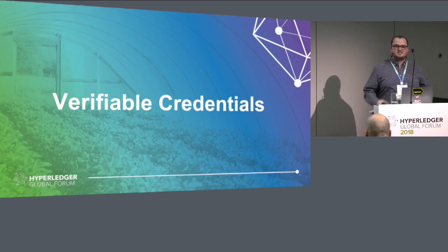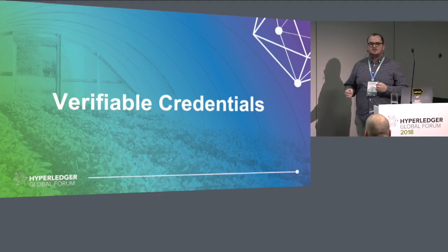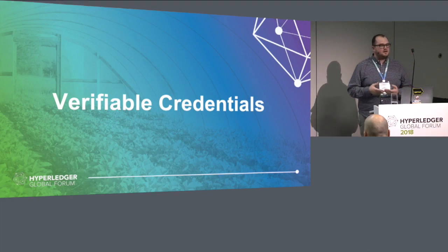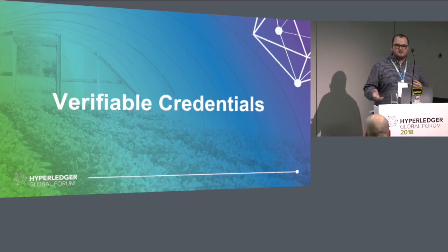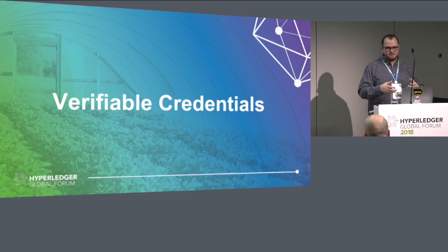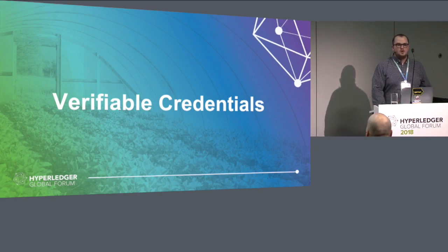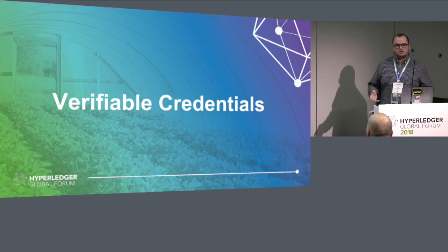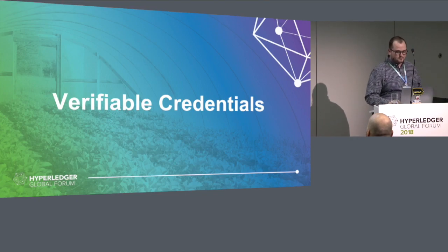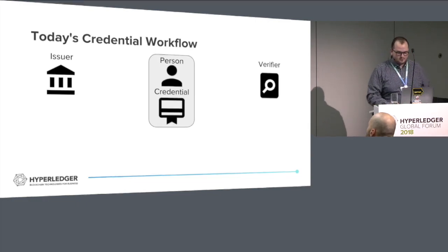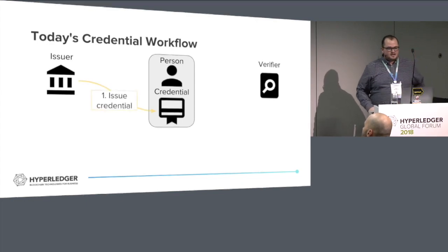Traditionally we've signed data but that signature and key hasn't been identifiable to any trusted source. With the combination of DIDs and verifiable credentials, we can now identify the provenance of that key and identify the source of the data - who's actually attesting that this is true. This allows us to leverage a lot of cool properties. Since we're doing signatures and using cryptography, we can do a lot of other cool things as well.